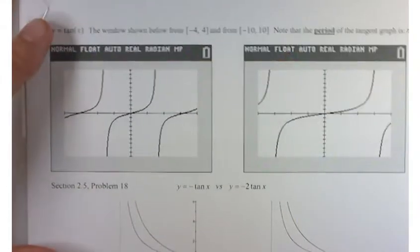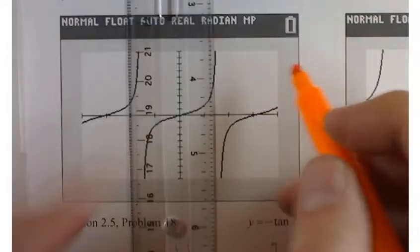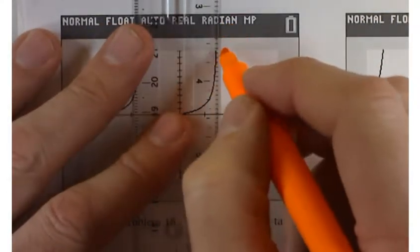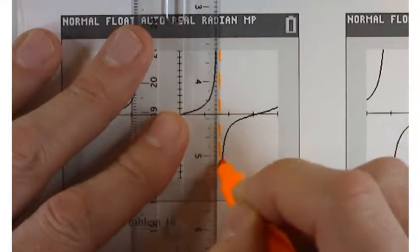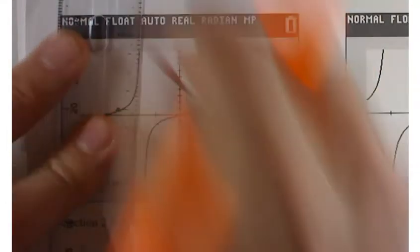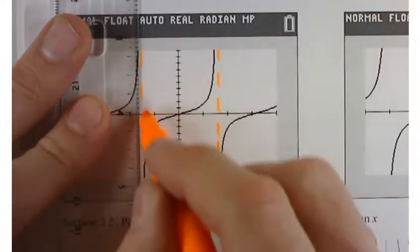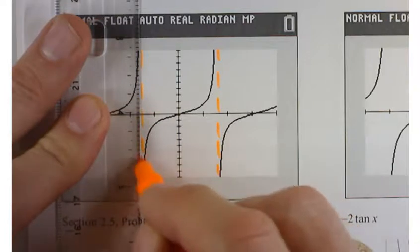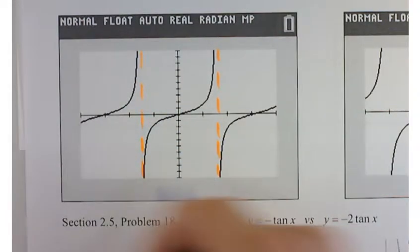So that graph is on the back of your handout. Secant had asymptotes at π over 2, 3π over 2, basically at odd multiples of π over 2. So if you wanted to sketch those in here, the ones that you would see on this graph, in the interval that's shown, are at negative π over 2 and π over 2.